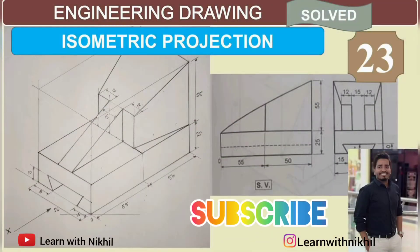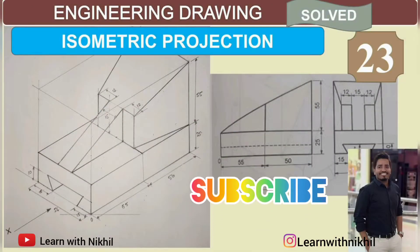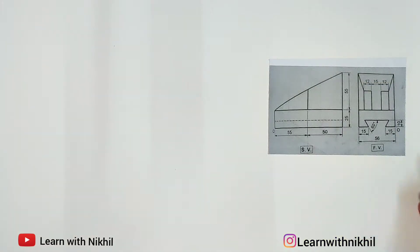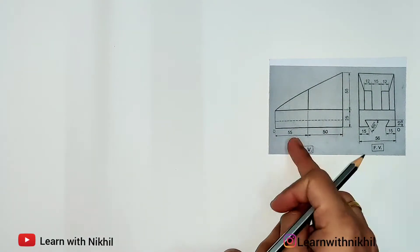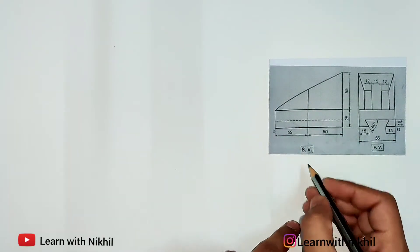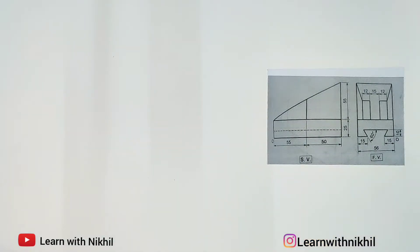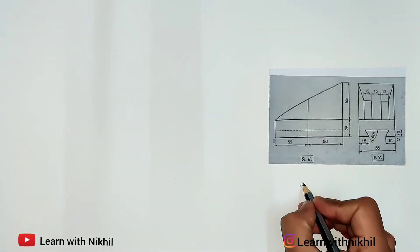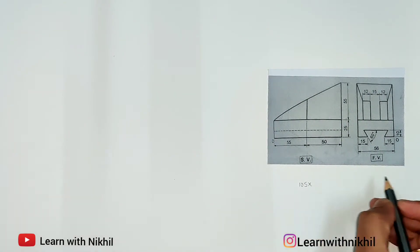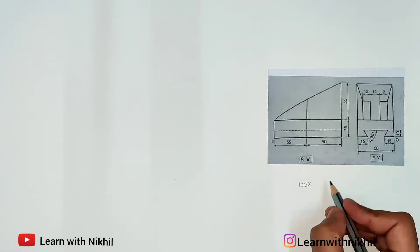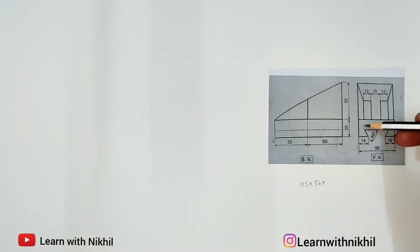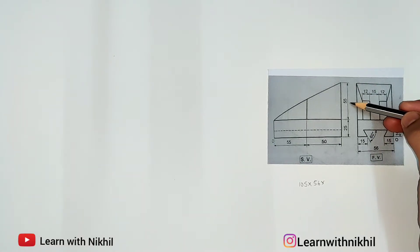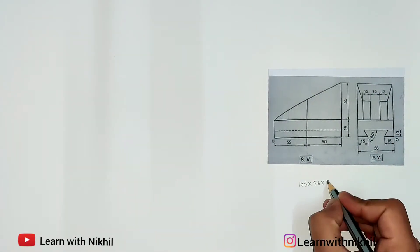Hello and welcome back to my channel, Learn with Nikhil. In this lecture we have taken another sum on isometric projection where we have been given the front view and the side view. First we will calculate the total width, height and depth. The total width is 55 plus 50, which is 105 millimeters. The total depth of the figure is 56 millimeters and the total height is 55 plus 25, that is 80 millimeters.